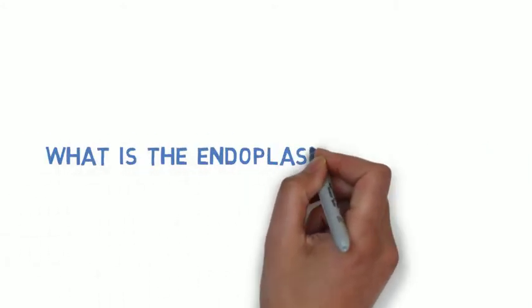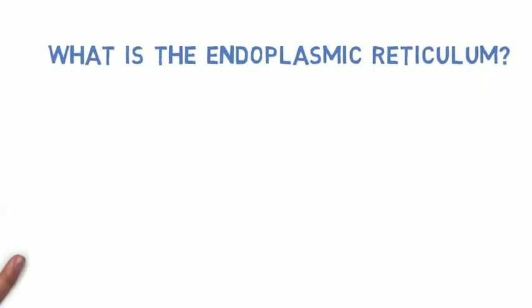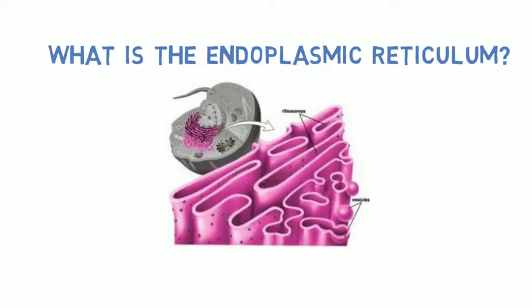So what is the endoplasmic reticulum? The endoplasmic reticulum, or ER, is a network of membranes continuous with the nucleus. There are two basic kinds of ER, the rough and the smooth.